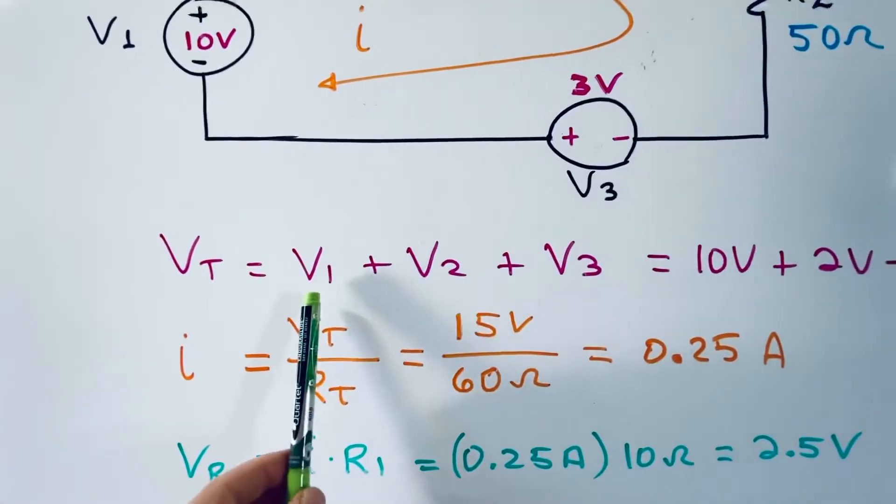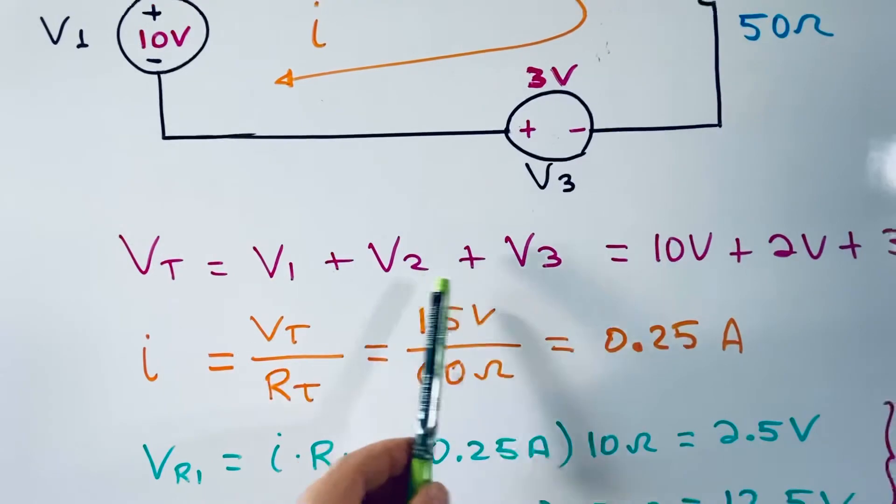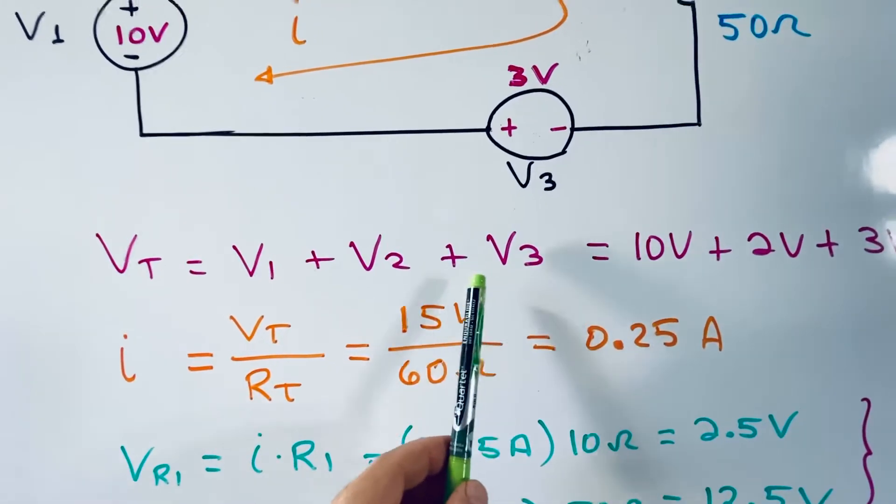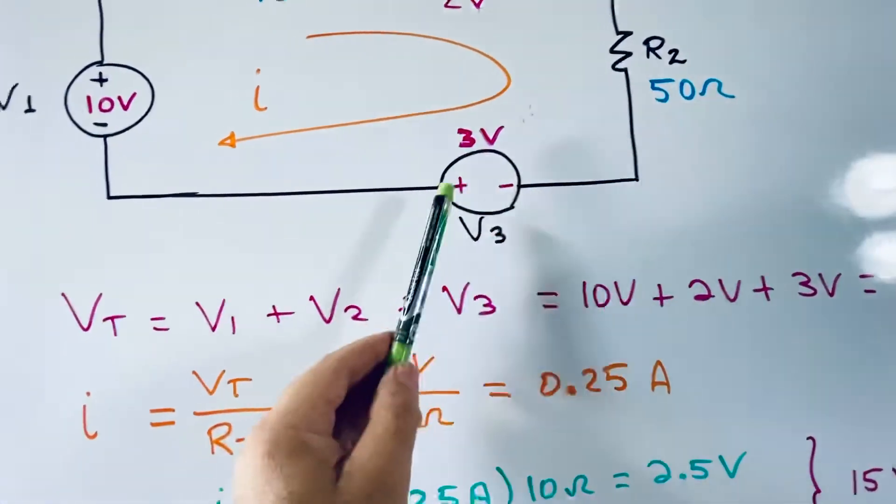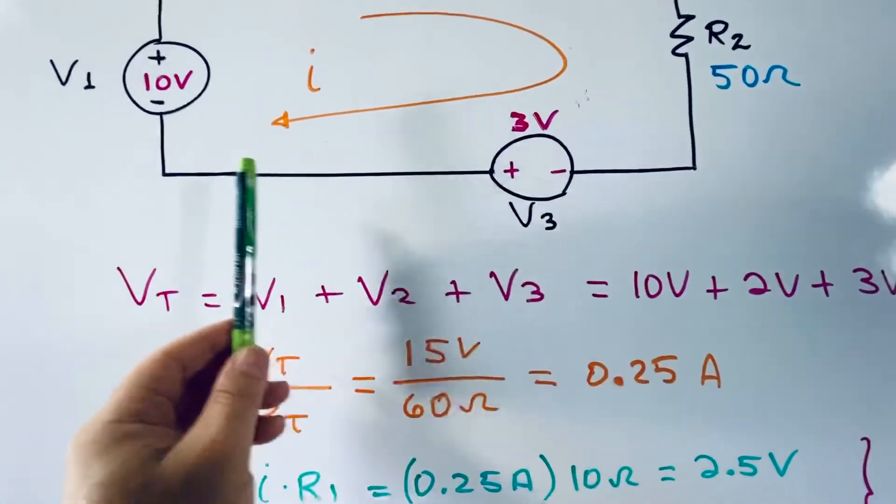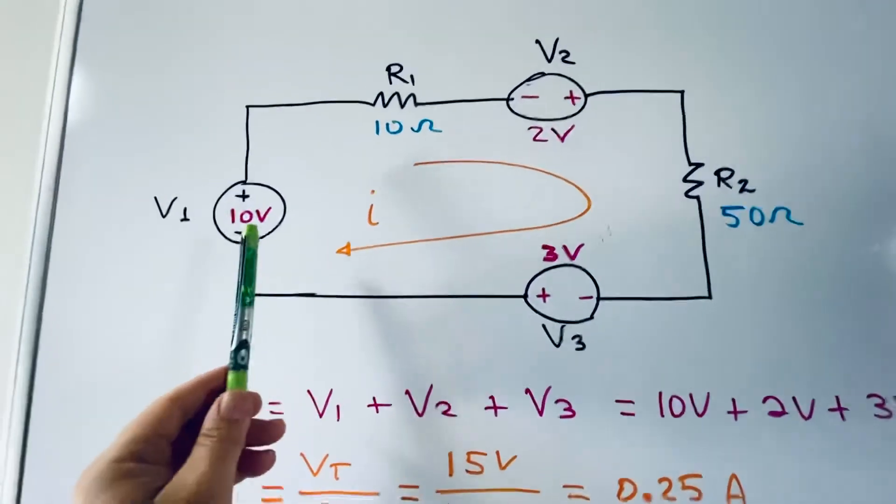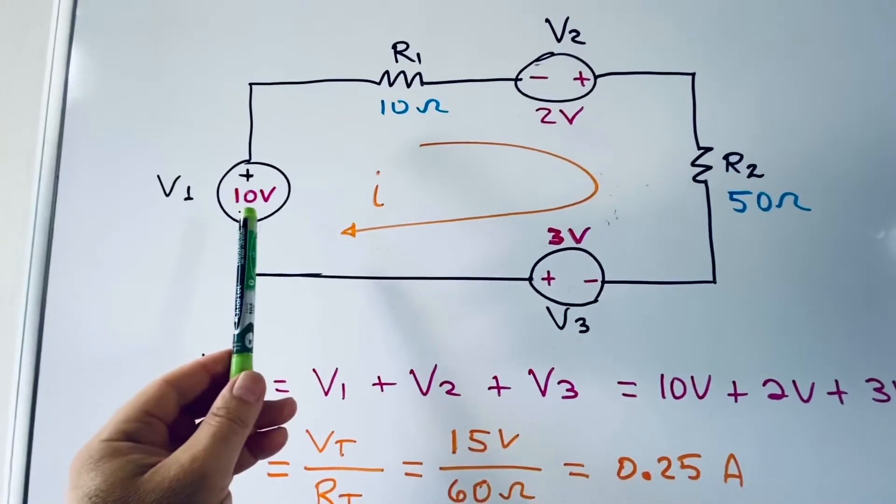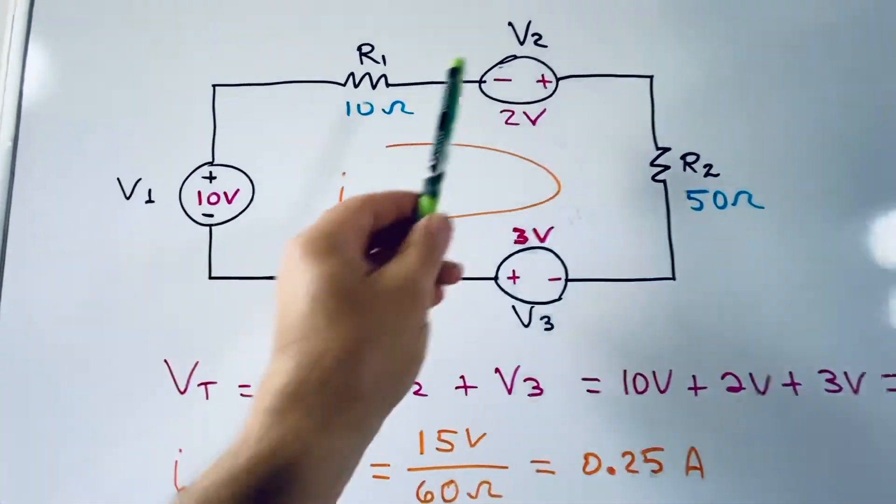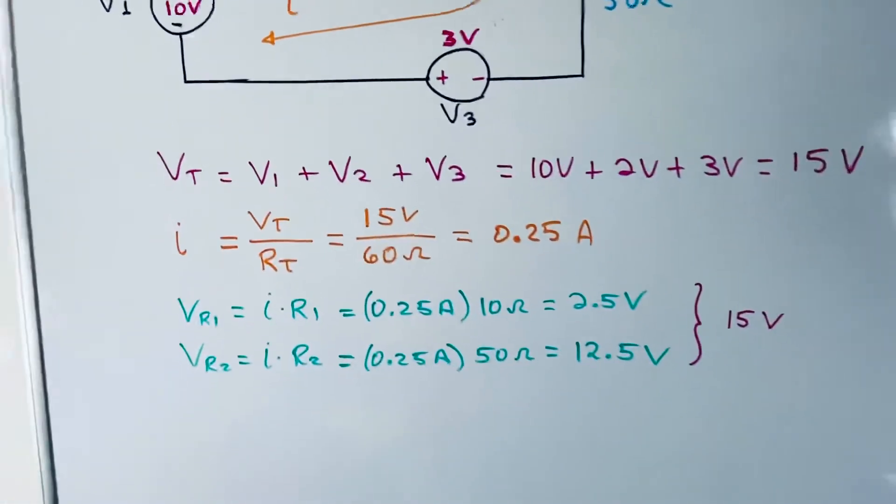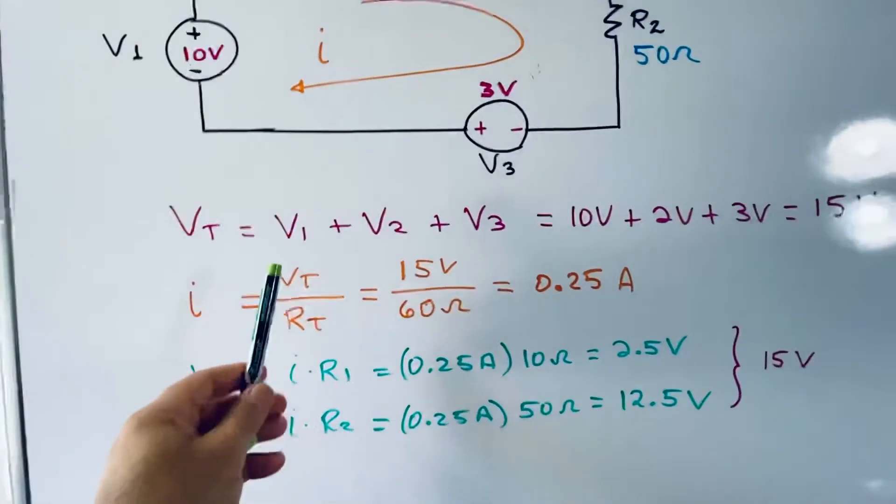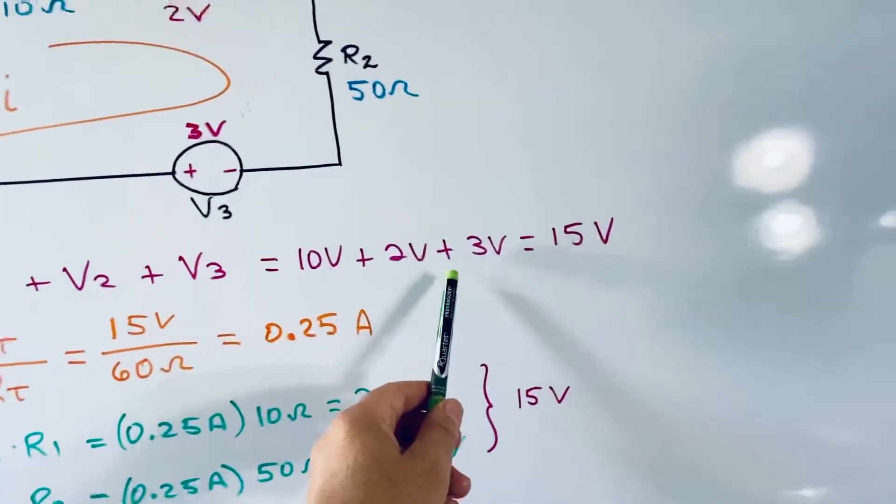That's why you have V1 plus V2 plus V3. You're not subtracting because you found that the positive is right here and the positive is right there. So this is equivalent to having three power supplies or three batteries in series with the correct polarity, and so the total voltage is the sum of three voltages that I have here.